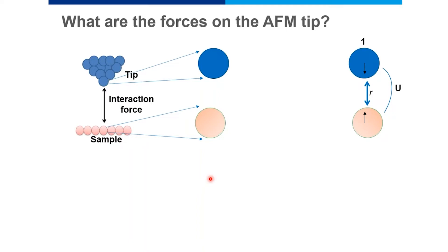As the tip atom comes close to the sample atom, their separation distance decreases, and the probability of interaction between them increases. As these atoms come closer and closer, their bonding potential energy decreases from zero to a negative value. At this first point, the atoms are very far away. As they come closer, they start to interact and there is a long-range attractive force on these atoms.